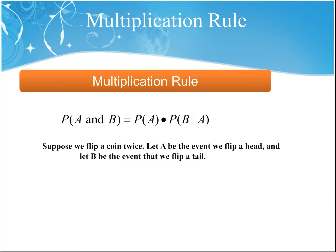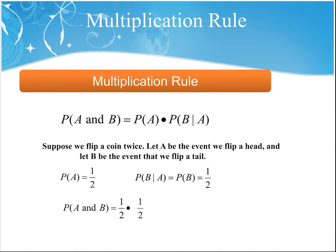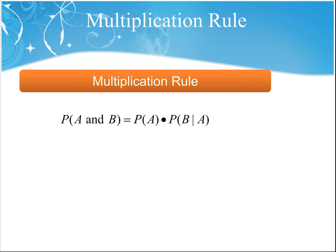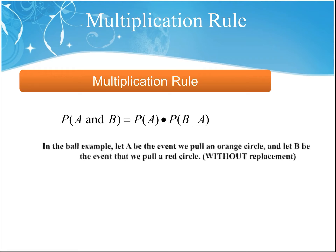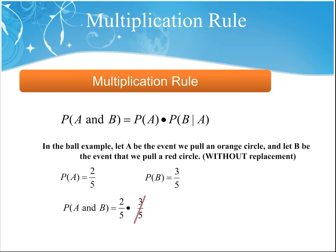Let's suppose we flip a coin two times. Let A be the event that we flip a head and B be the event that we flip a tail. The probability of event A is one-half, and the probability that we flip a tail given that we already had a heads is still one-half — those two events are independent of each other. So the probability of flipping heads and then tails is one-half times one-half.